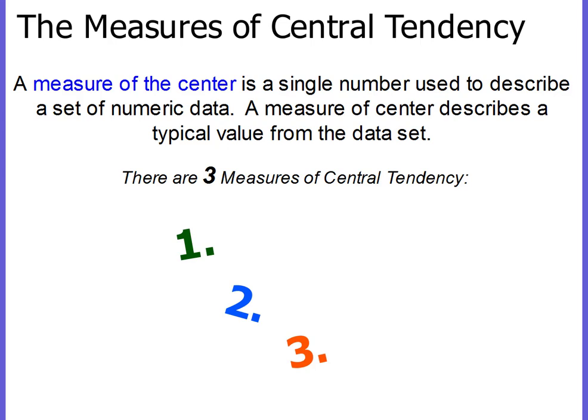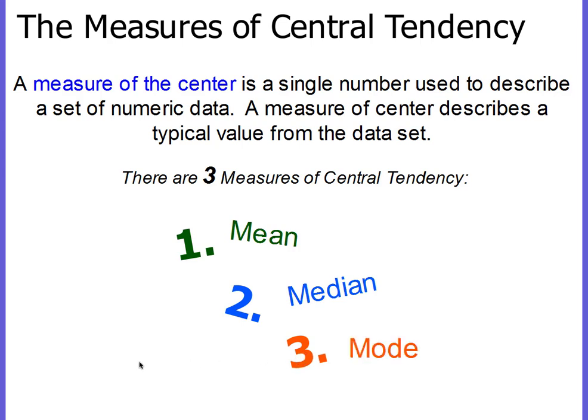A measure of the center of a set of data is a single number that is used to describe the set of numeric data. A measure of center describes a typical value from the data set, and there are three measures of central tendency: the first is the mean, the second measure is the median, and the third is the mode.